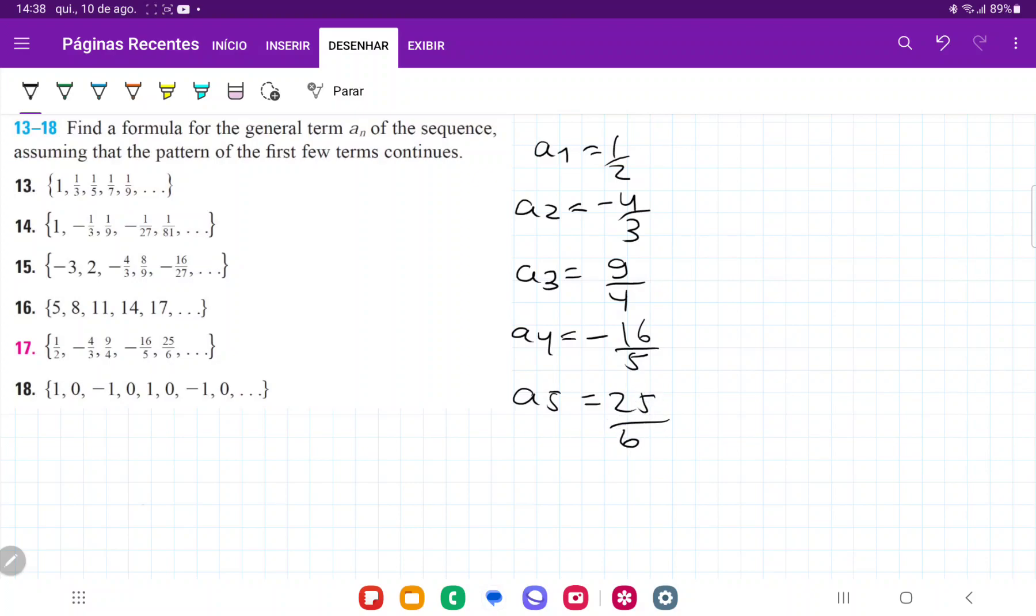Immediately we see the first pattern is that we oscillate between plus, negative, plus, negative, and plus. To account for this changing of signs, we need (-1) to the power of something, because (-1) to the power of odd numbers gives us negative, and to the power of even numbers gives us positive.